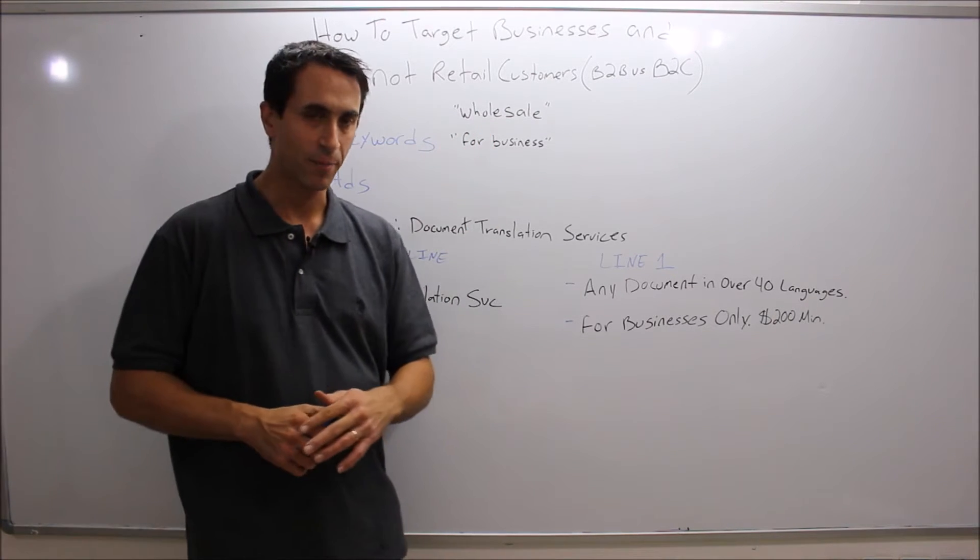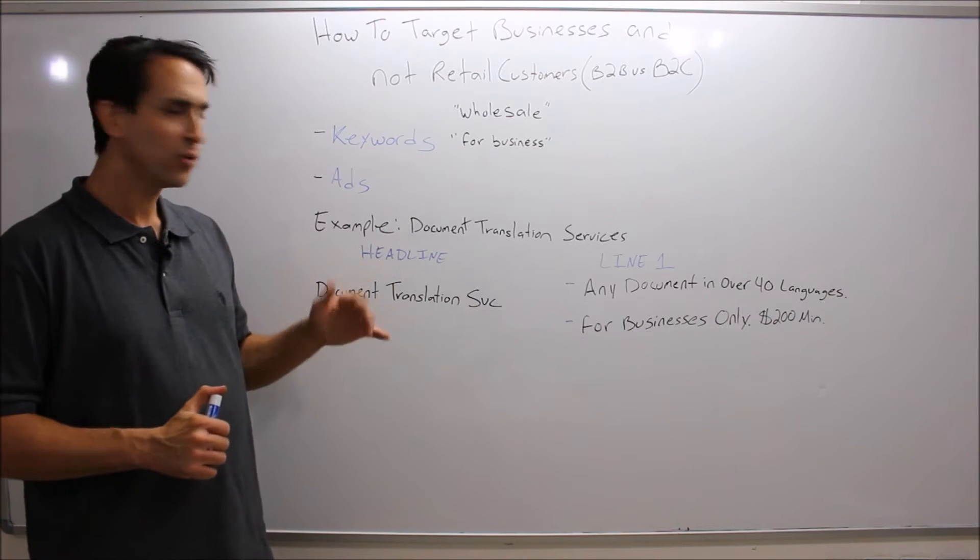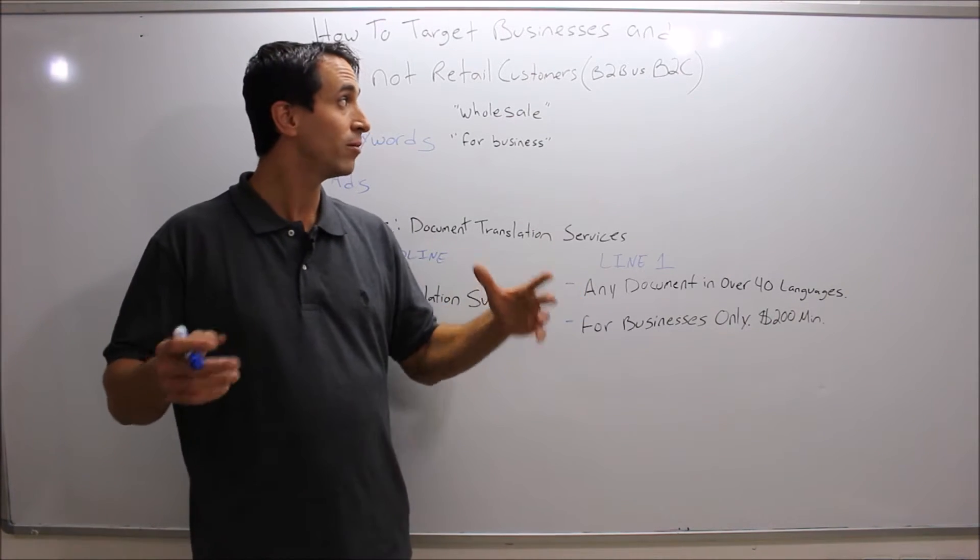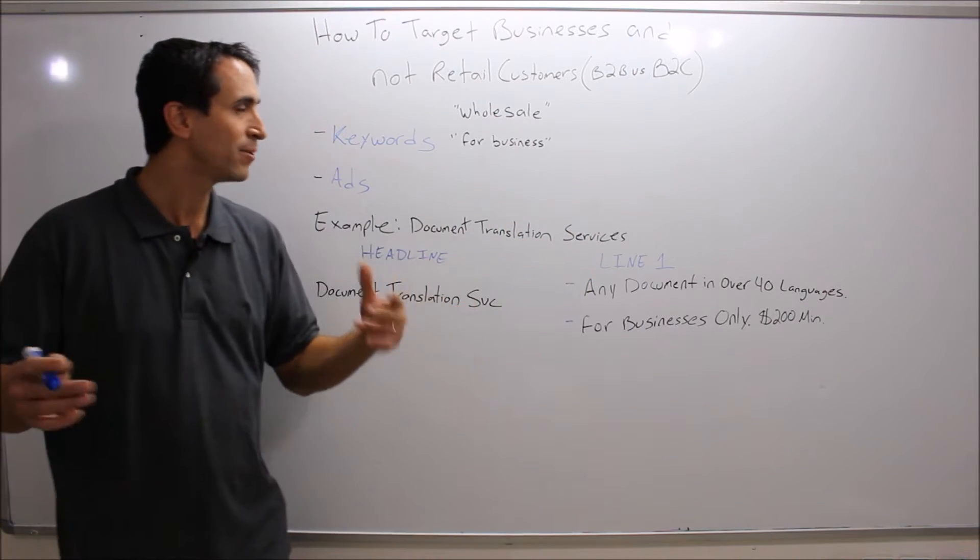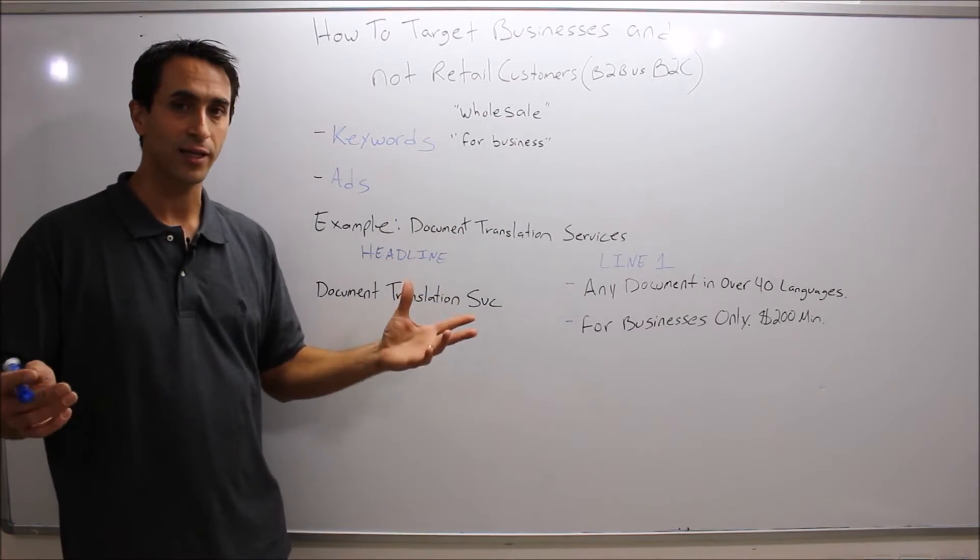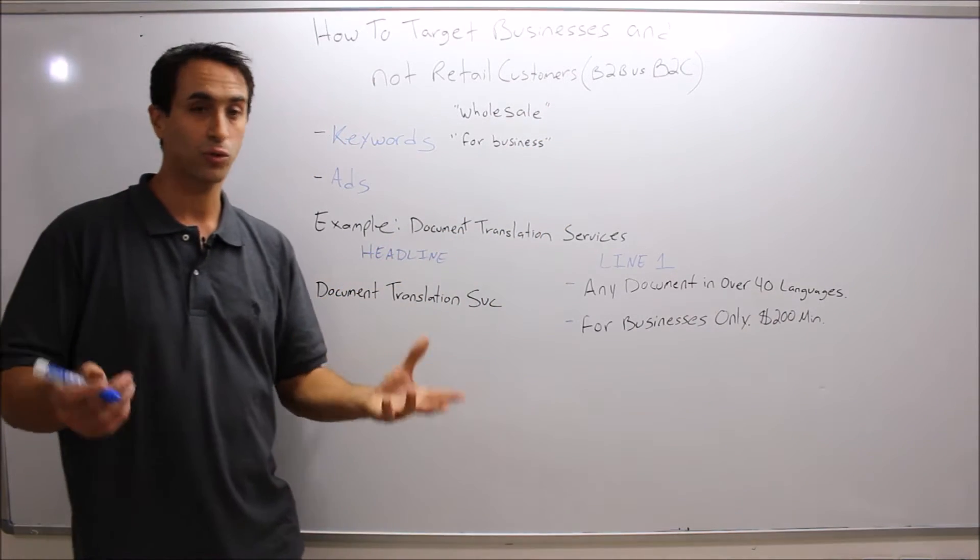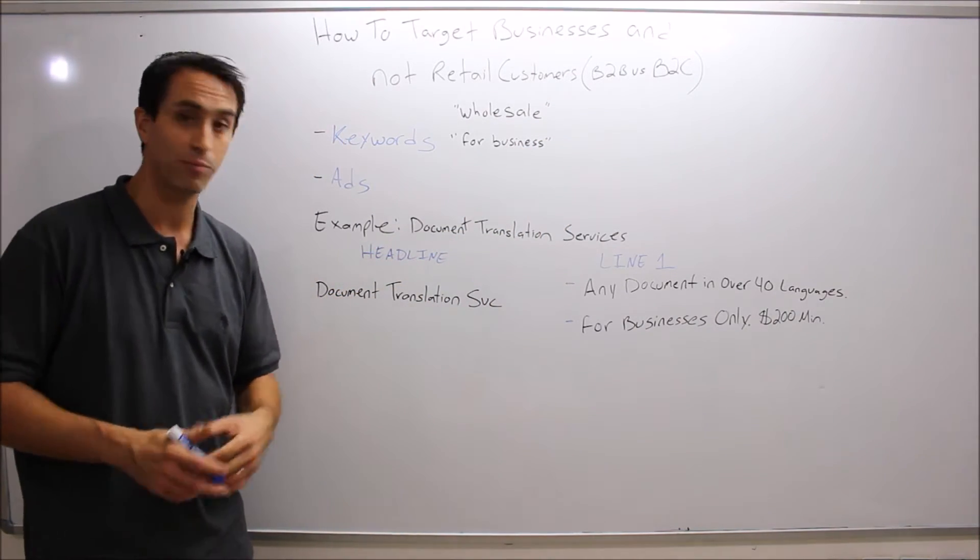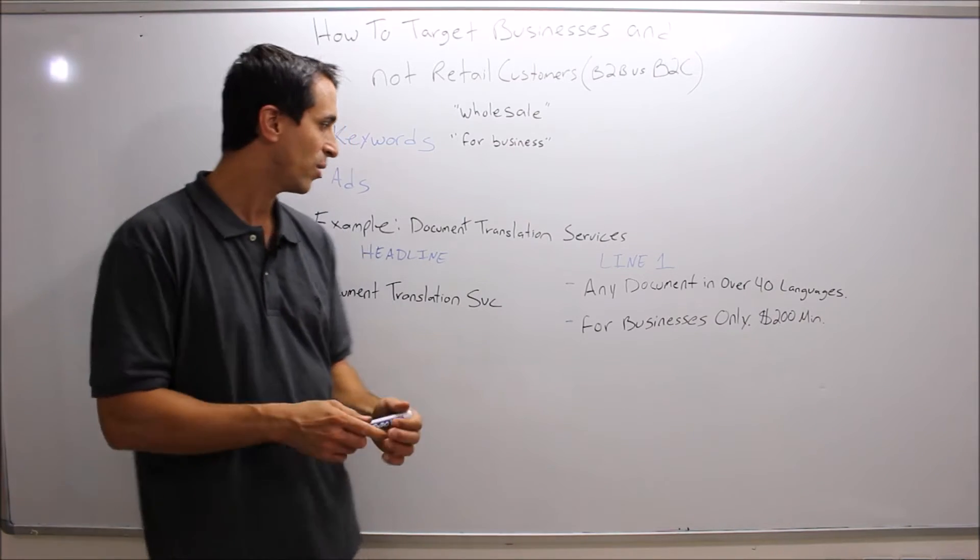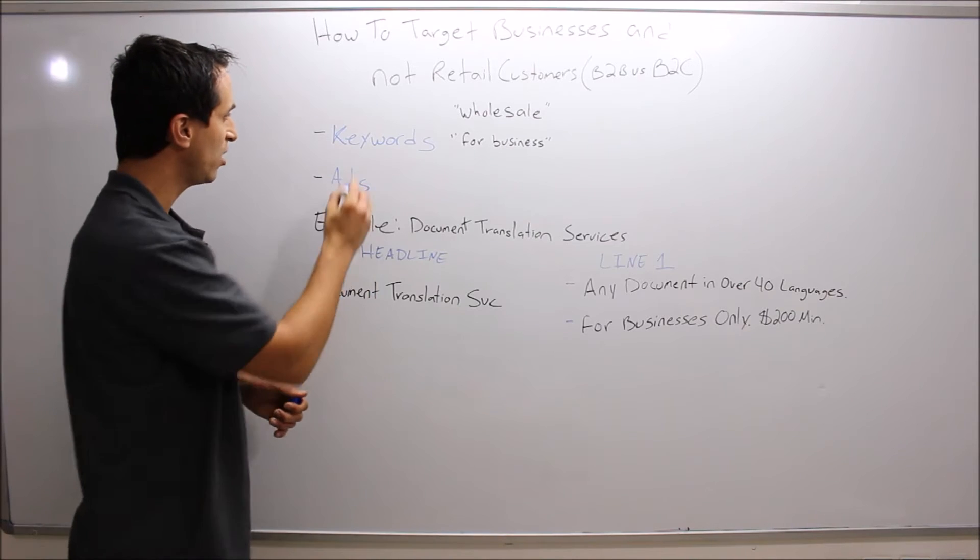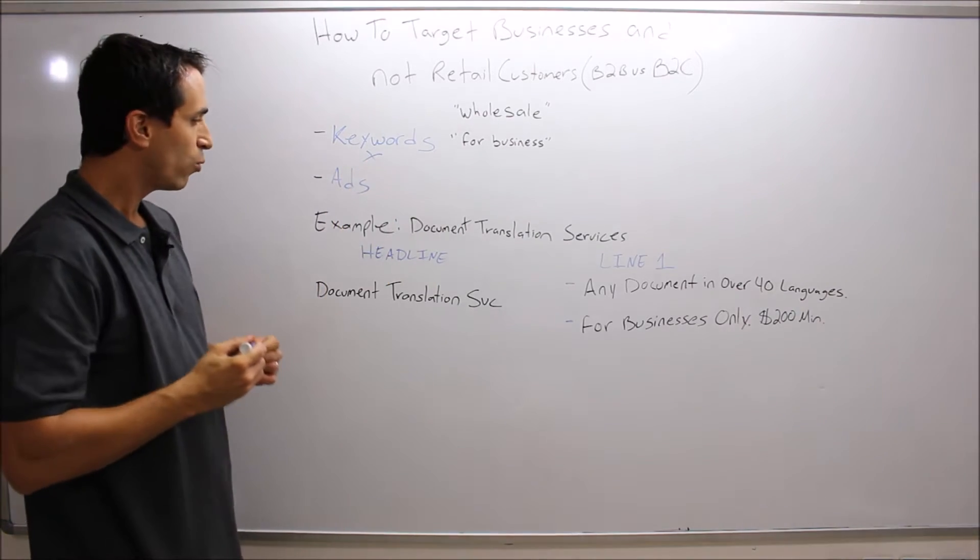The challenge is if someone looks for 'document translation services,' you don't know if it's a B2B client or a B2C client. A small client looking to translate a birth certificate - or a document could be a brochure, contract, proposal, a lot of things. This keyword can actually target both. In this case, the keyword won't help us. So what would?